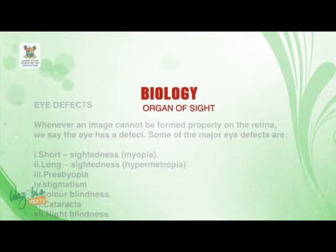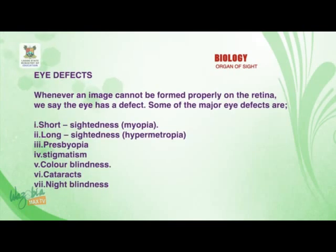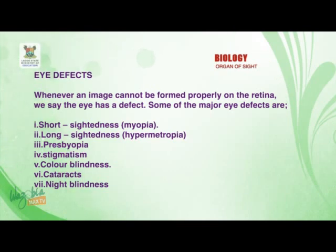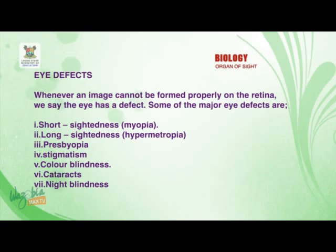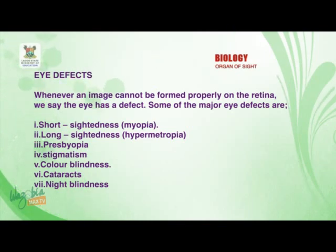Welcome back. Now let's look at eye defects. Whenever an image cannot be formed properly on the retina, we say the eye has a defect. Some of the major eye defects are short-sightedness or myopia, long-sightedness or hypermetropia, presbyopia, astigmatism, color blindness, cataracts, and night blindness. Now let's look at them one after the other.